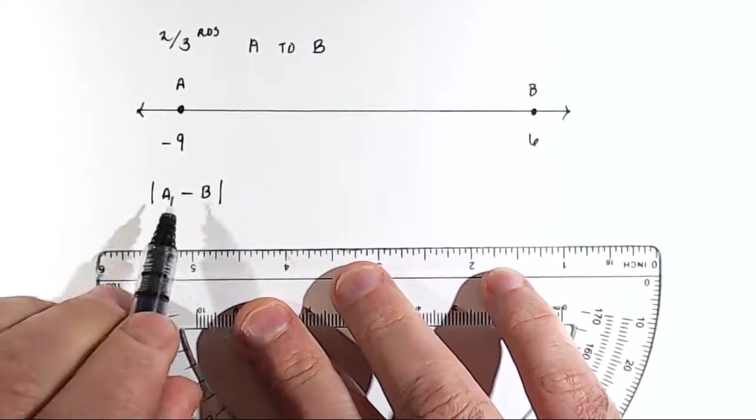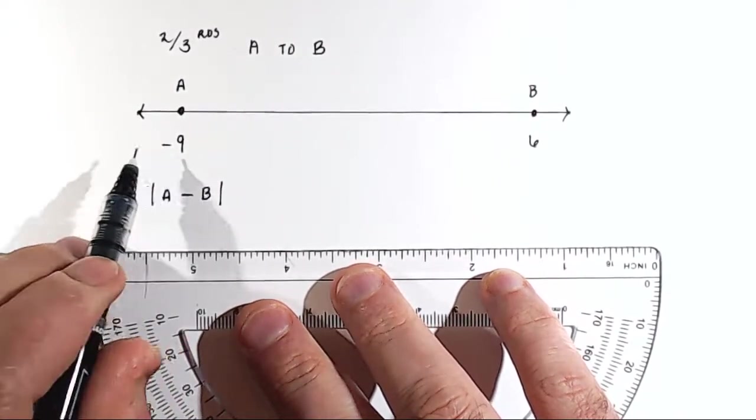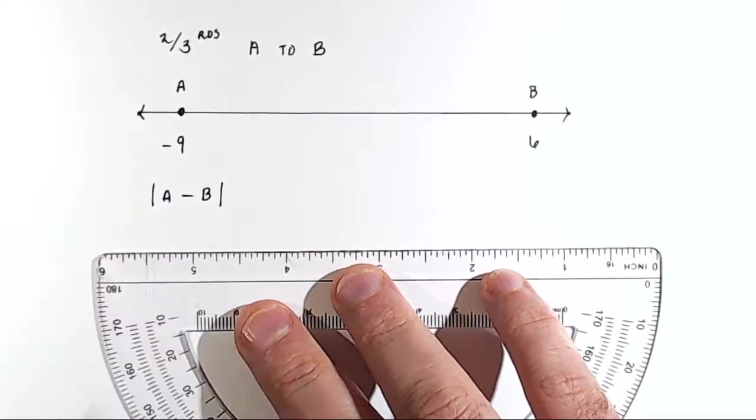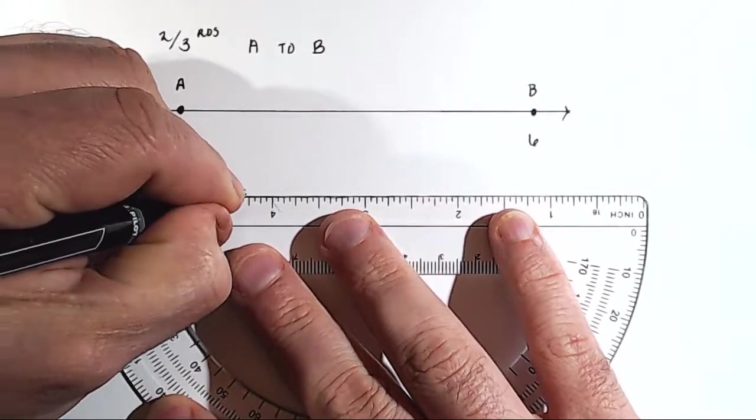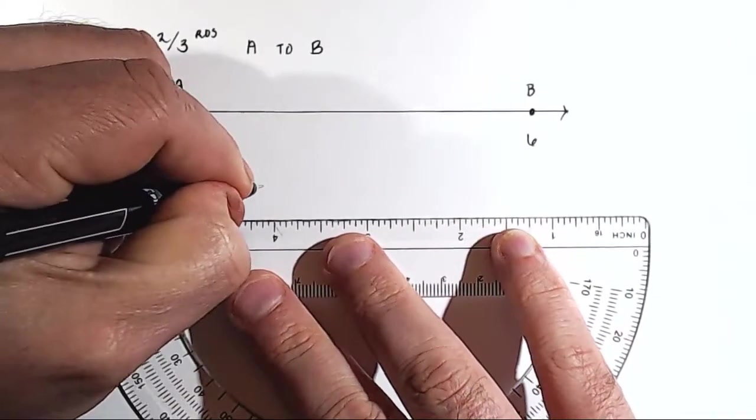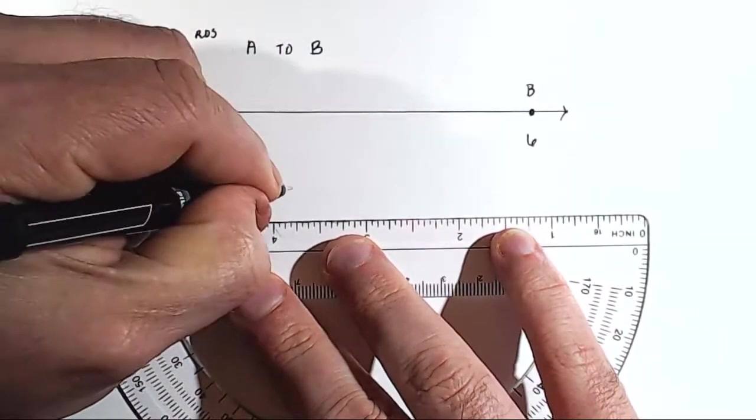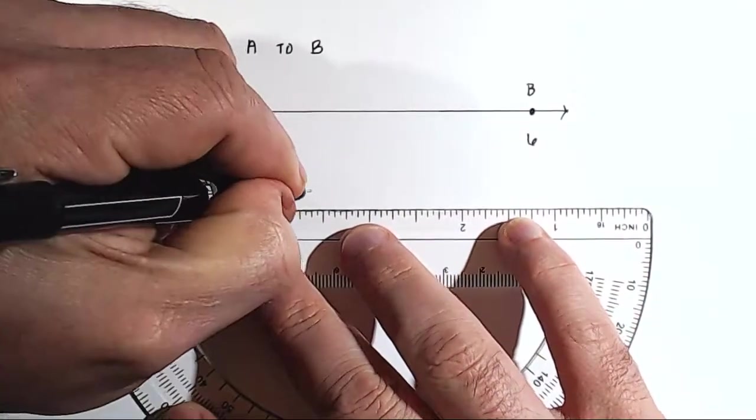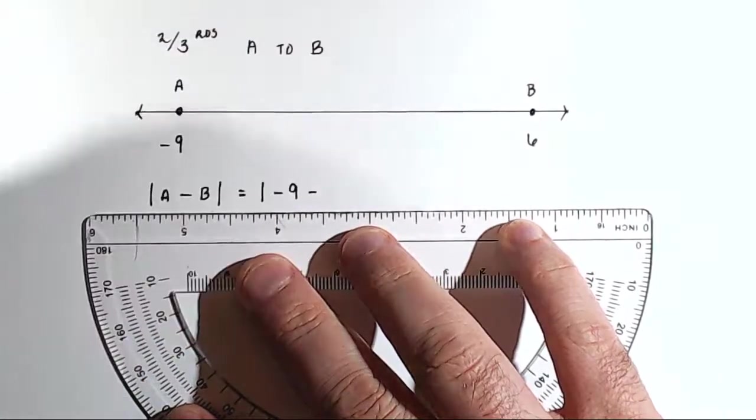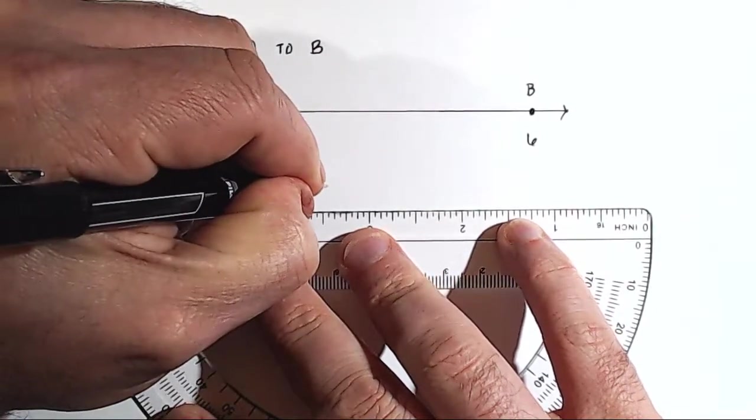And so we just substitute in our coordinates for point A and point B. In this case, it would be negative 9 for point A, and 6 for point B. So negative 9 minus 6.